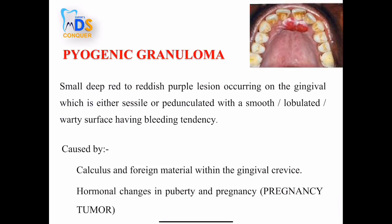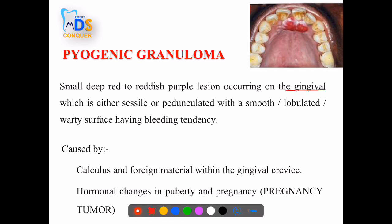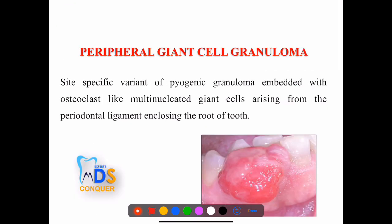First, under reactive lesions, is pyogenic granuloma — a deep reddish lesion which occurs on the gingiva. It is either sessile or pedunculated and shows severe bleeding tendency. The causative agent could be calculus, foreign material in the gingival crevice, or hormonal changes during puberty and pregnancy.